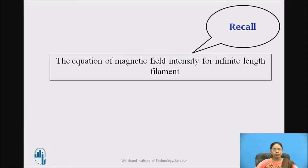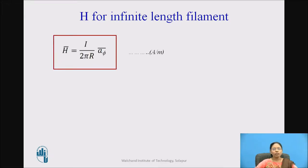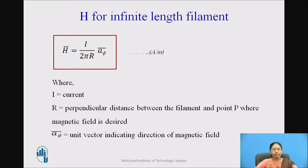Before we proceed further, as we are finding out the magnetic field intensity for finite and infinite length filament, let us first look at the infinite length filament. Recall the equation of magnetic field intensity for infinite length filament: H bar equals I divided by 2πR times A_phi bar, with units of amperes per meter. Here I is current, R is the perpendicular distance between the filament and point P where magnetic field is desired, and A_phi bar is the unit vector indicating the direction of the magnetic field.